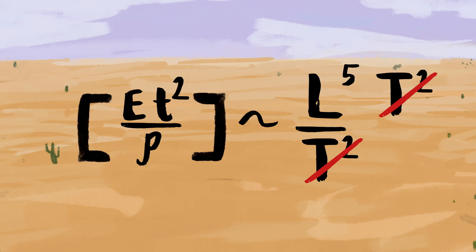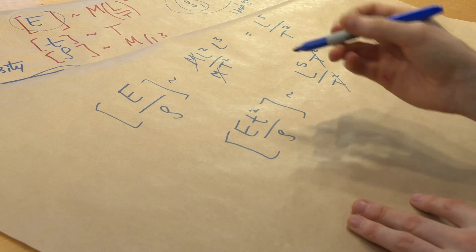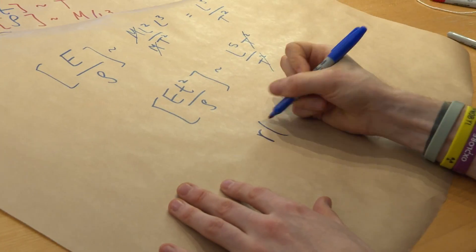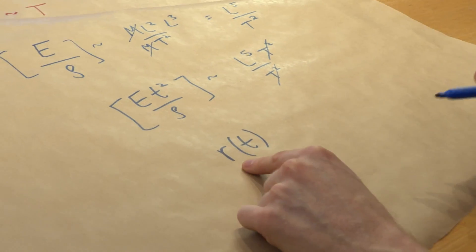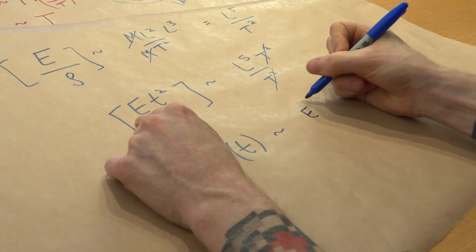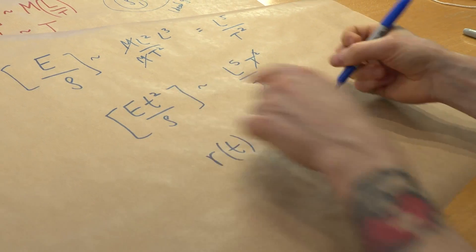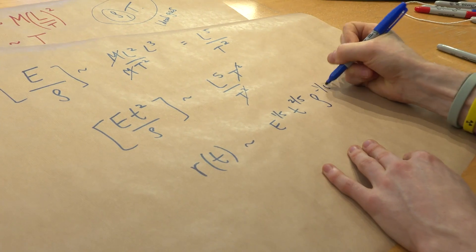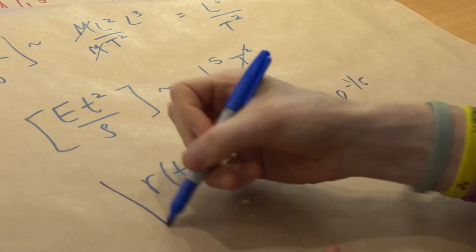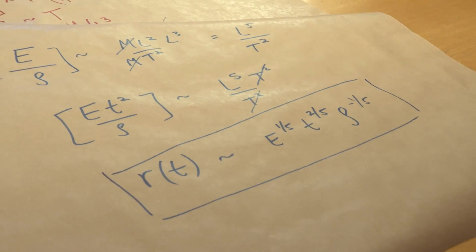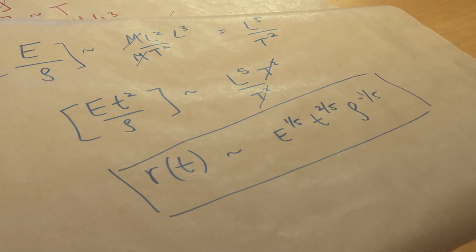This is a length to the power of five, but we just want a radius — just L — so we take the whole thing to the power of one-fifth. So the time-dependent radius of an atomic bomb is proportional to energy to the one-fifth, time after the explosion to the two-fifths, and air density to the minus one-fifth. And that right there was the most closely guarded military secret in the US in the 1940s.